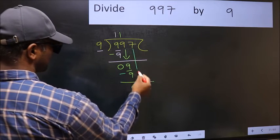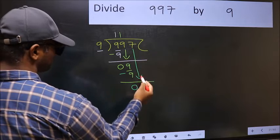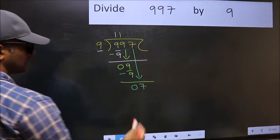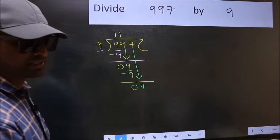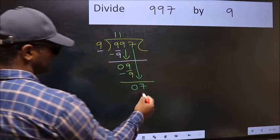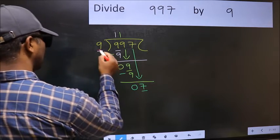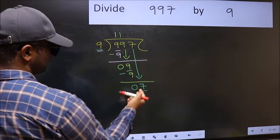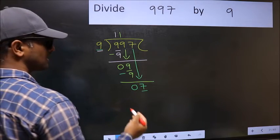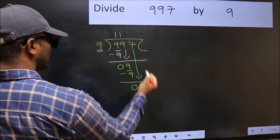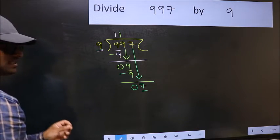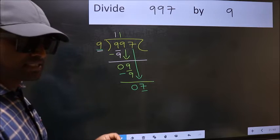After this, bring down the beside number. So 7 down. After this step, the mistake happens. And the mistake is this. Here we have 7 and here 9. 7 is smaller than 9. So what many do is, they directly put dot and take 0. Which is wrong.